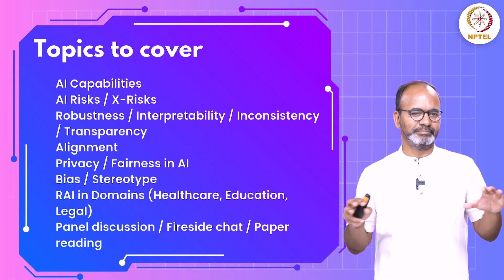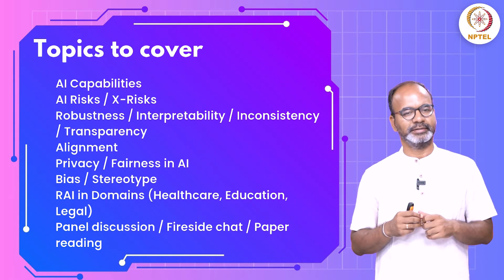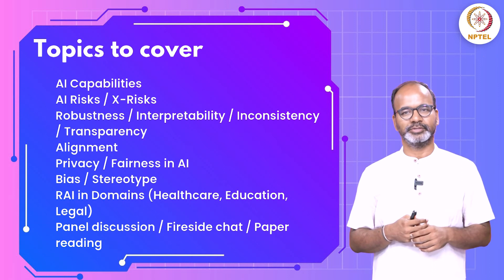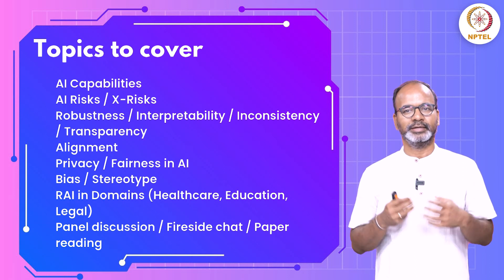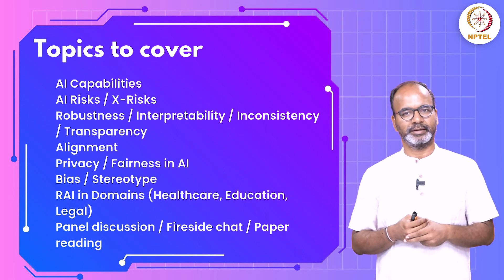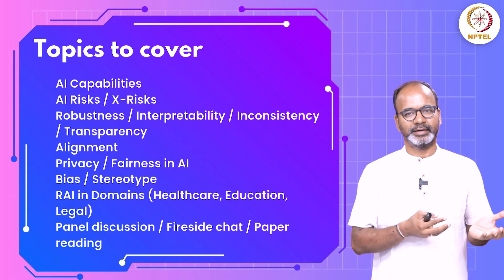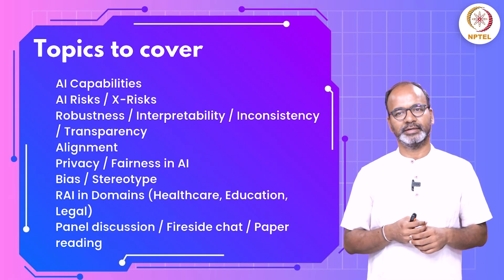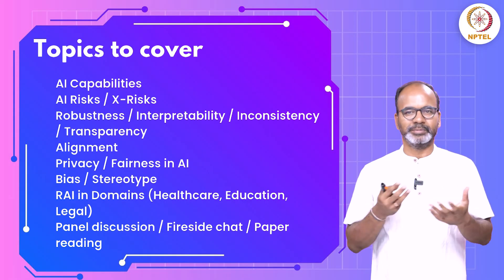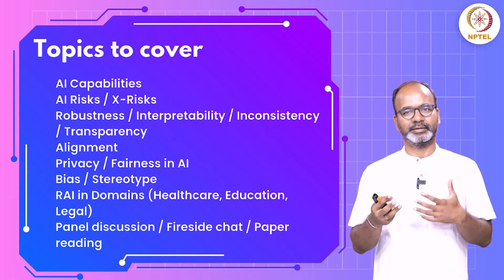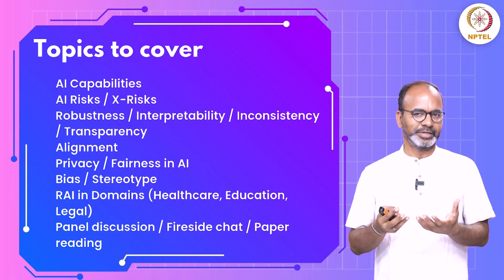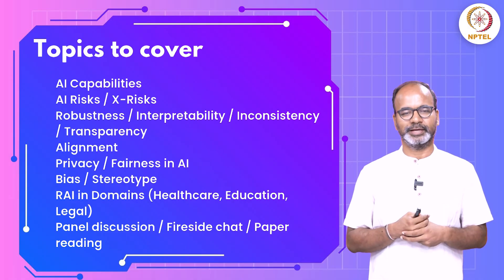Then we'll take a view into different verticals. Currently we're thinking about healthcare, education, and legal, where responsible AI comes into play. For example, in legal systems — when a judge is using these technologies, what are the problems that can occur? Where should the lawyer be more careful? Where should the judge be more careful when they are making choices?